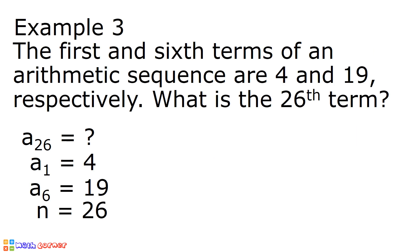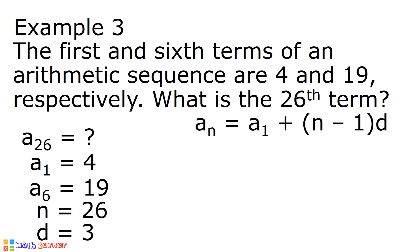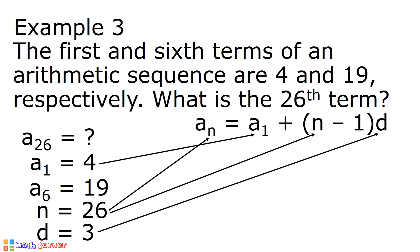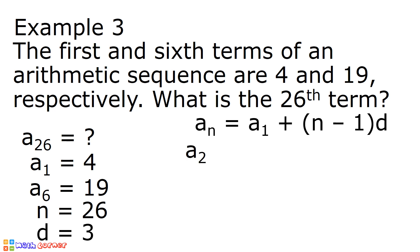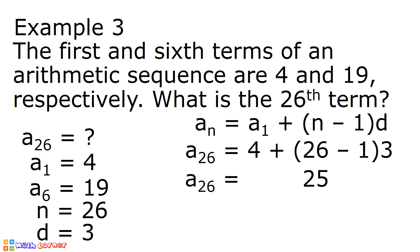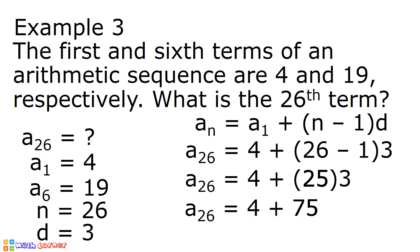After solving for the common difference, let us now solve for the 26th term. This is our formula, and we will substitute 4 to a sub 1, 26 to n, and 3 to d. After substitution, we have a sub 26 is equal to 4 plus quantity 26 minus 1 times 3. 26 minus 1 is 25, so we have a sub 26 is equal to 4 plus 25 times 3. 25 times 3 is 75, so a sub 26 is equal to 4 plus 75. 4 plus 75 is 79, and that is the 26th term of our arithmetic sequence.